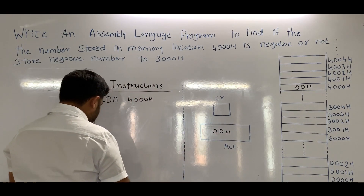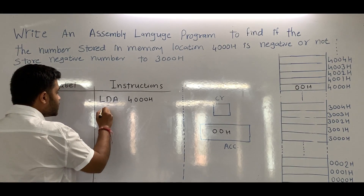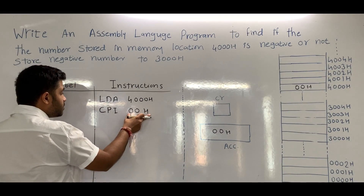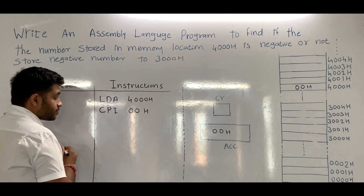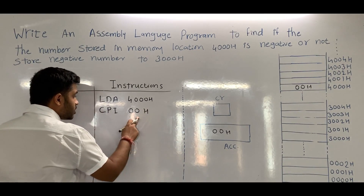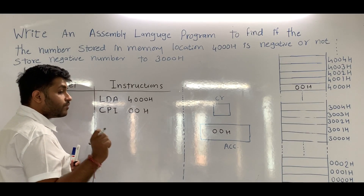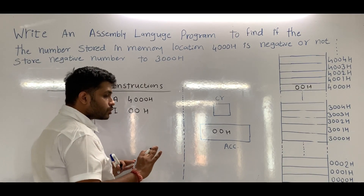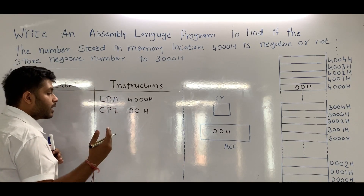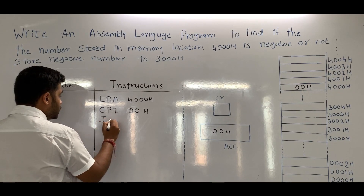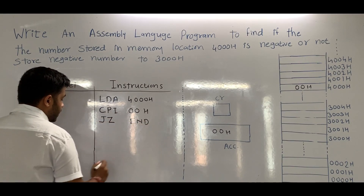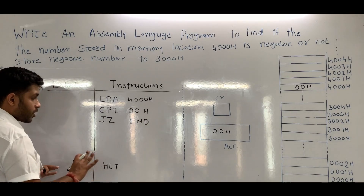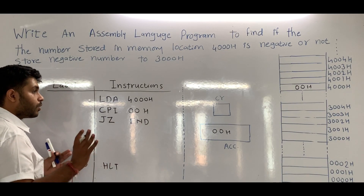To check whether the number in the accumulator is 0 or not, we will use the instruction CPI 00H. CPI 00H means a comparison between 00H and the accumulator will be done. If the data in the accumulator equals 00H, the zero flag will be set — meaning the data is 0. In that case, we have to stop the program using the instruction JZ END, where END is the HLT instruction. We will not check whether the number is negative or positive.